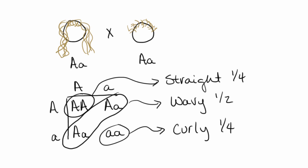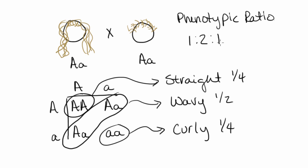Looking at the phenotypic ratio: we have one straight, two wavy, and one curly. So the phenotypic ratio here is one to two to one. This contrasts with monohybrid crosses involving complete dominance, where we get a phenotypic ratio of three to one.